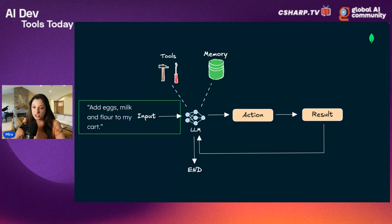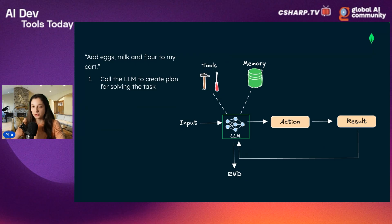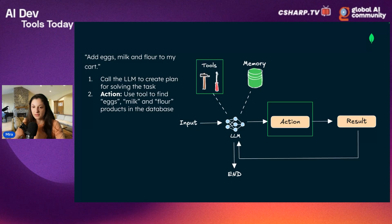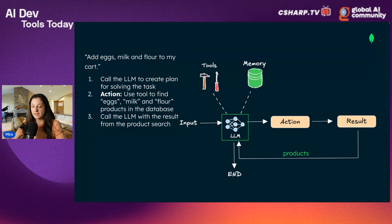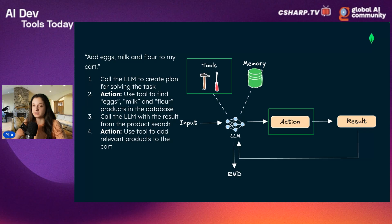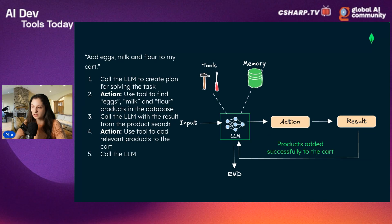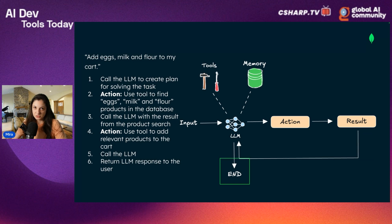The inputs will be natural language. The first thing the agent does is call the model to create a plan for solving the task. The first action in the plan is using a tool to find products in our database. After the products are found, the agent calls the LLM again, and the LLM decides if those products are sufficient and whether to proceed. If so, the agent calls another tool to add the relevant products to the cart. After the tool executes successfully, the agent calls the LLM once more and it returns the appropriate response to the user.